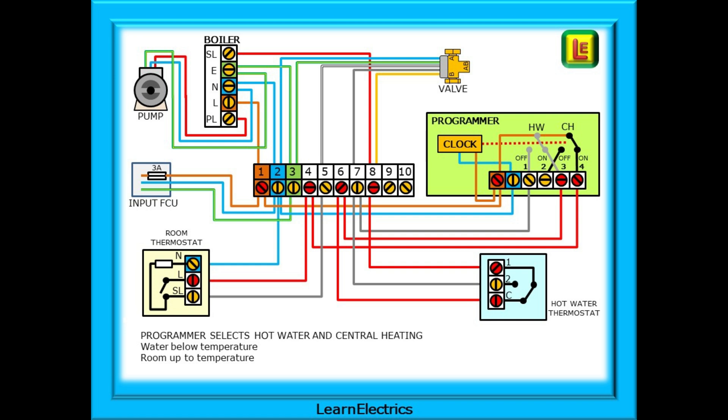Now the programmer selects hot water and central heating. The hot water heating is already enabled as the water thermostat is connecting C and one. So what happens to the central heating? With the room up to temperature and the thermostat in the open position, 240 volts flows from programmer number four terminal to wiring center terminal number four, and then down to the L terminal on the room thermostat, where it stops. The central heating is not enabled.